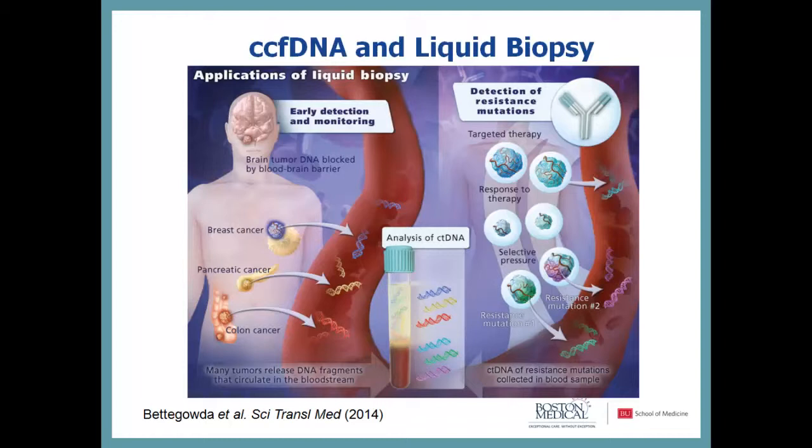You can also use circulating tumor DNA to determine the right directed targeted therapy by identifying mutations present in the tumor. You can monitor response to therapy, and you can actually watch the tumor mutations — the clonality of the tumor — change in response to selective pressure from therapeutics.